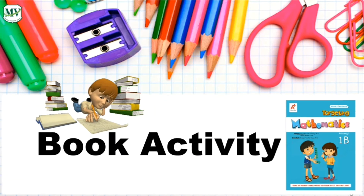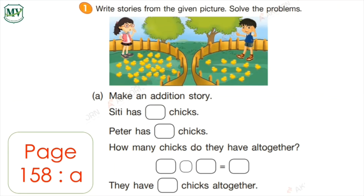Now, kids, get your mathematics book and open it on page 158, letter A. Let's make an addition story from the given picture. How many chicks does Citi have? Citi has 27 chicks. How about Peter? Peter has 12 chicks. The question is, how many chicks do they have all together? 27 plus 12 equals 39. Therefore, they have 39 chicks all together.